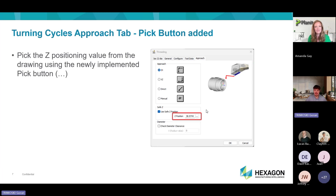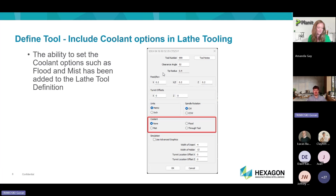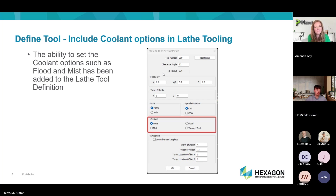The next update with the lathe is we included the option for coolant in the tool. Previously, this was in the machining style — in the operation. We've now moved it to the tool as well. It will still be in the operation, but when you create the operation it will default to whatever you had chosen in the tool. You can still change it in the operation, but it defaults to what is set in the tool.